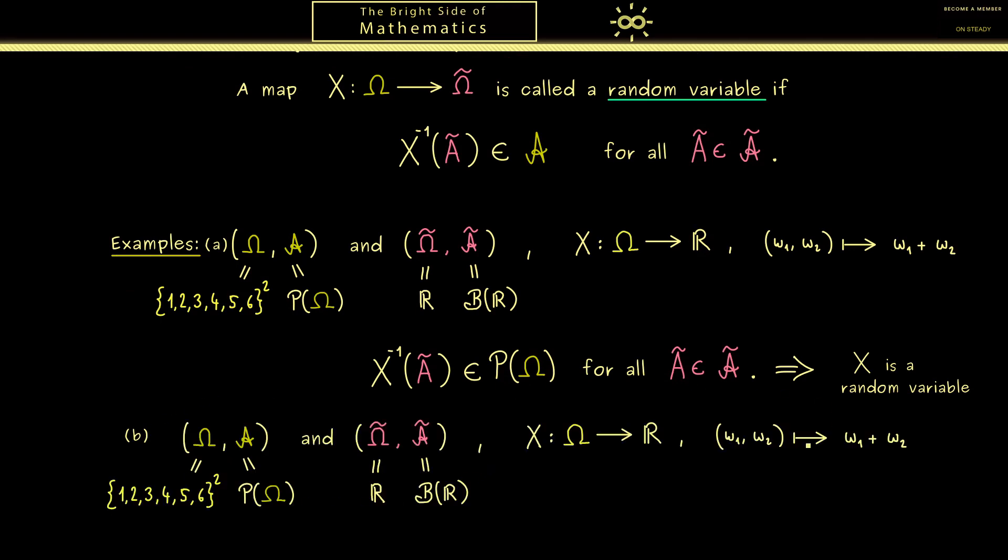For example, you could take the same case again, but now we will change the power set here. So we take another sigma algebra A. Hence instead of the largest one, the power set, we take the smallest one. So the only events we have in our sigma algebra A are the empty set and Ω itself. Then of course we immediately find a counter-example. You just have to look at the pre-image of the singleton {2}.